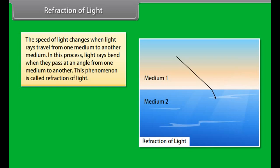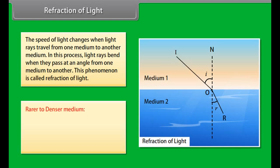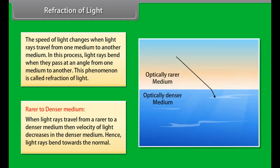Refraction of light: The speed of light changes when light rays travel from one medium to another. In this process, light rays bend when they pass at an angle from one medium to another — this is called refraction of light. When light travels from a rarer to a denser medium, the velocity of light decreases, and light rays bend towards the normal.